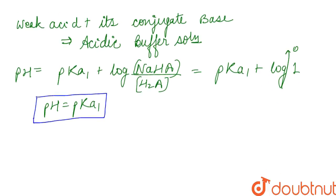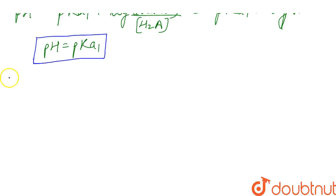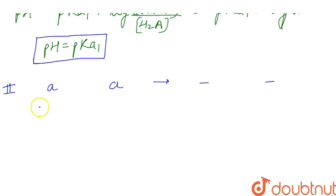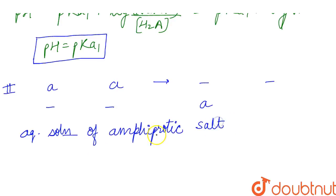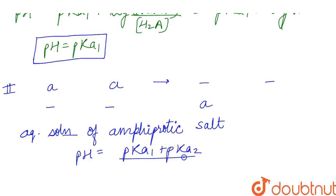Now, when we reach the first equivalent point, all the H₂A has reacted and we are left with a full solution of the amphiprotic salt NaHA. For an amphiprotic salt solution, the pH formula is: pH equals (pKa₁ plus pKa₂) divided by 2.